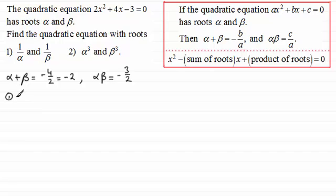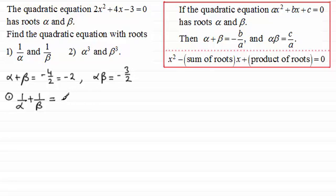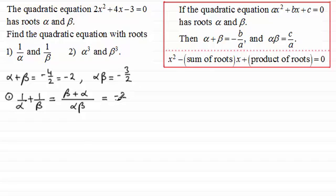For part 1, with roots one over alpha and one over beta, we first work out the sum of the roots. So we start with one over alpha plus one over beta and put this over a common denominator of alpha beta, giving beta plus alpha on top. We can see that alpha plus beta is minus 2, divided by alpha beta which is minus 3 over 2, and this comes out as 4 thirds.